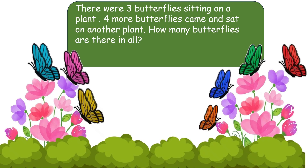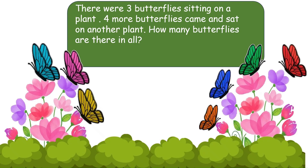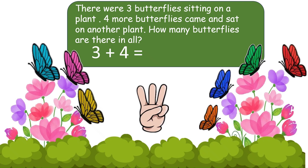Now your time starts. We have to add 3 plus 4. Which one is the smaller number here? 3. Right. So, open 3 fingers. Now let's count forward from 4: 5, 6, 7. So, the answer is 7. There are 7 butterflies now.